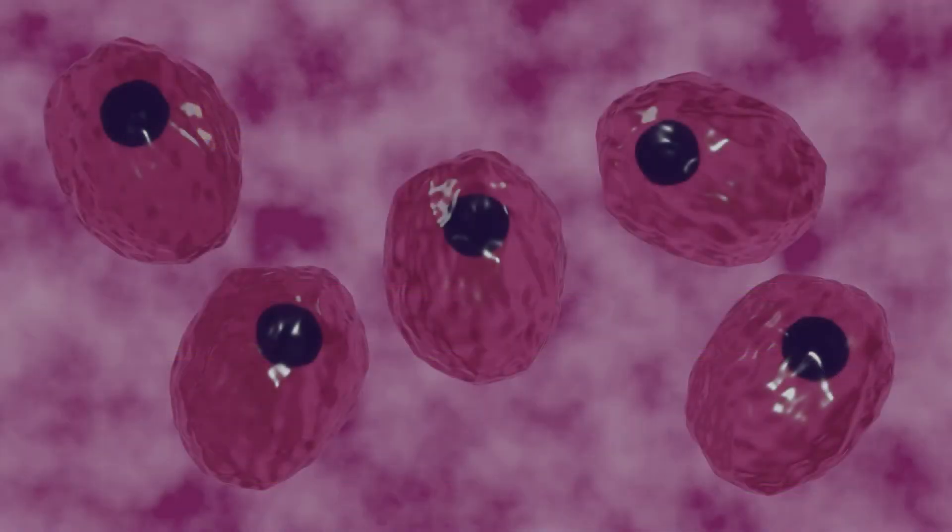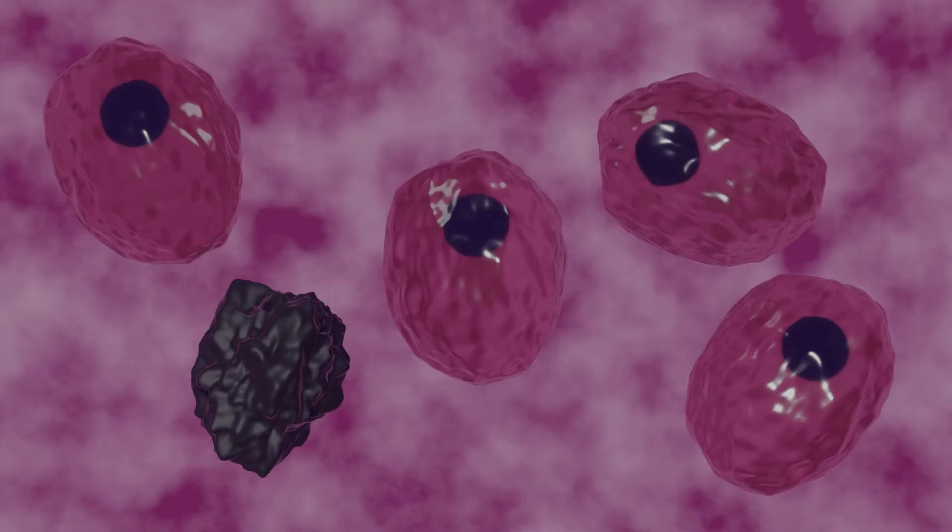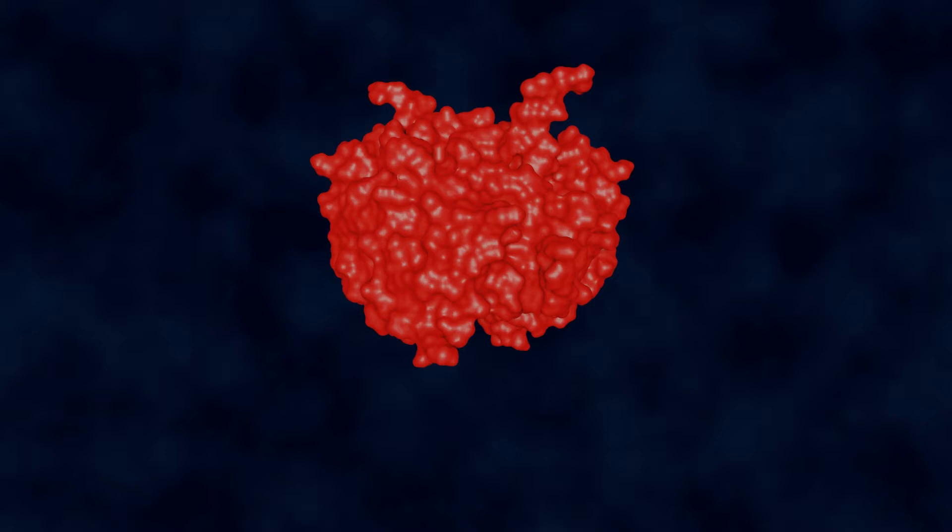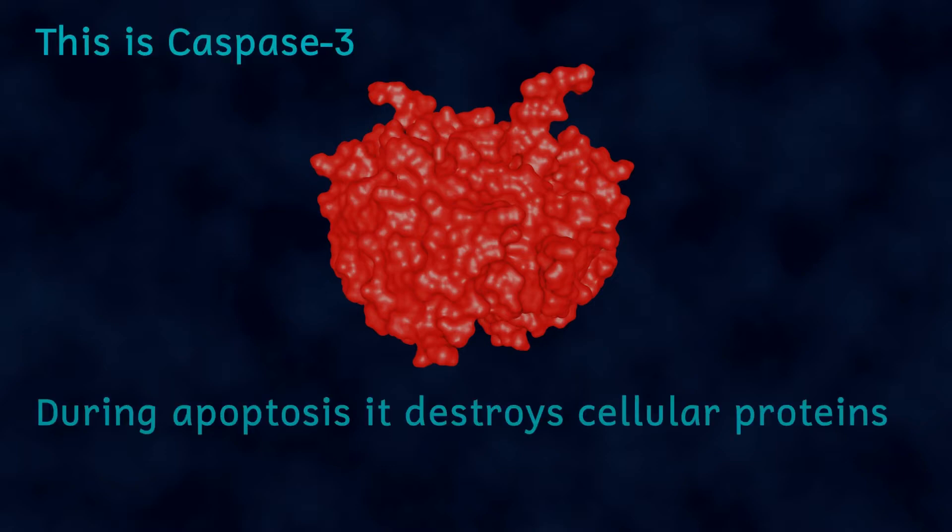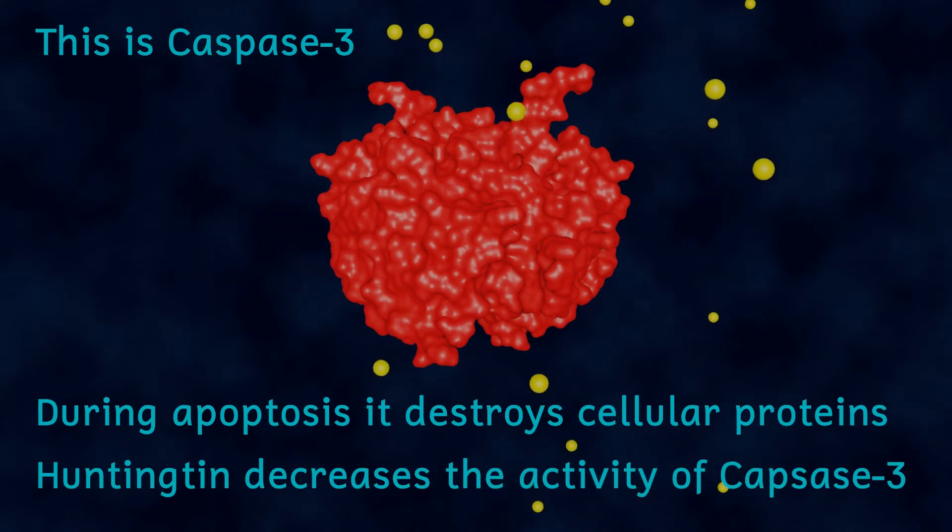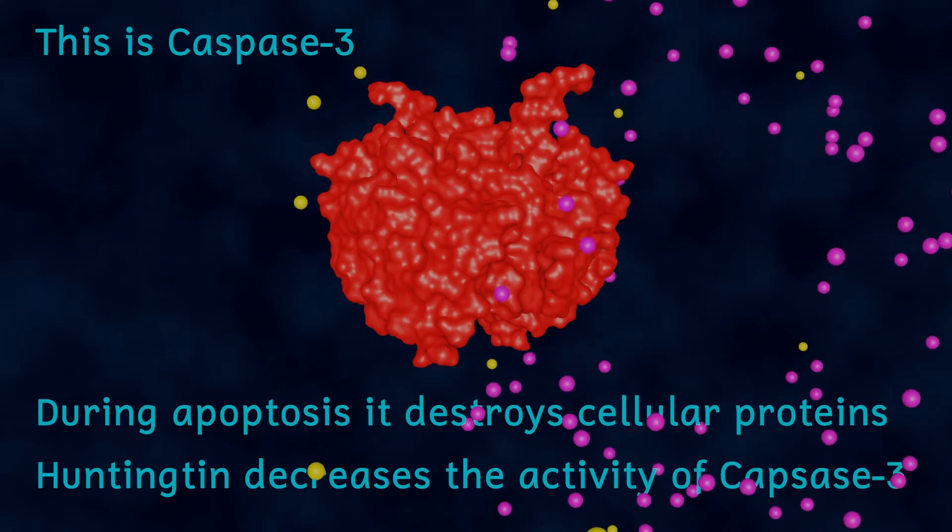This means then that Huntington promotes the production of BDNF helping brain cells to survive and grow and we're not finished there. Cells undergo a process called apoptosis or programmed cell death and this obviously kills the cell and in order for this to happen a group of enzymes called caspases are needed. Huntington has been shown to stop the activity of these caspase enzymes and in doing so helps the cell to stay alive longer and not die.